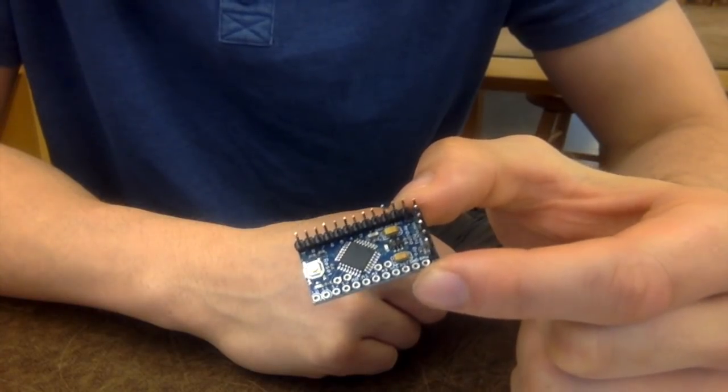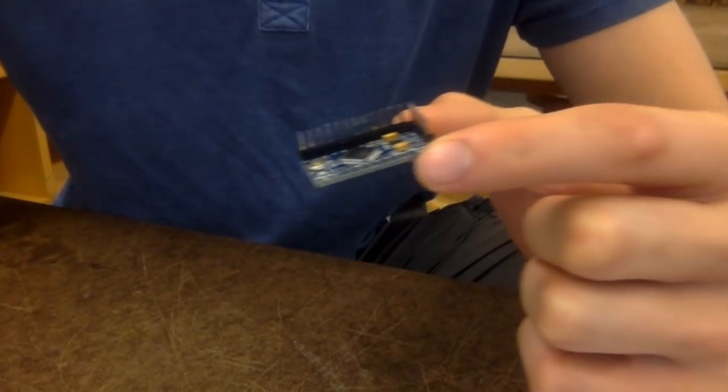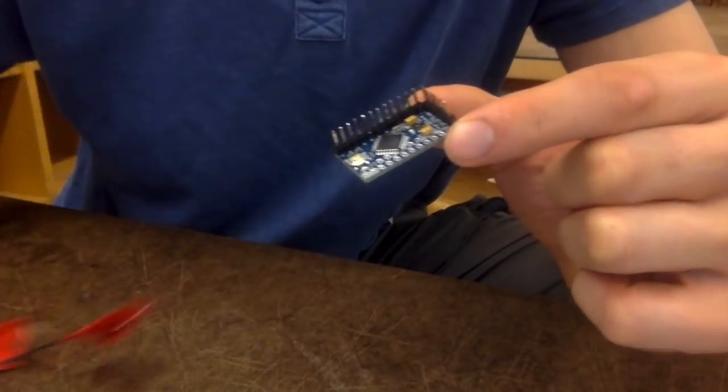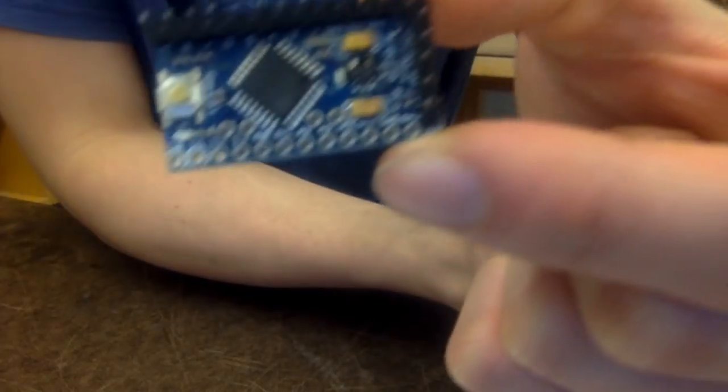I'm replacing the Arduino Uno with an Arduino Mini. It is much more compact, yet still retains all the functionality we need. As you can see, I've already gotten started soldering on the I.O. pins.